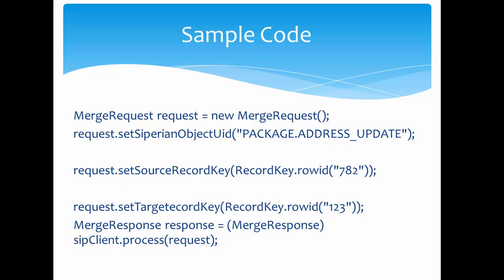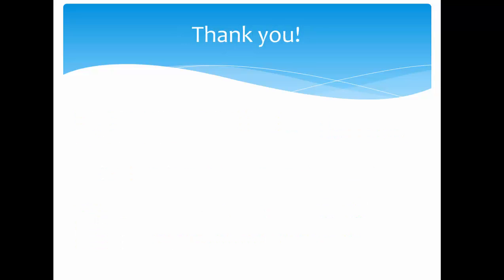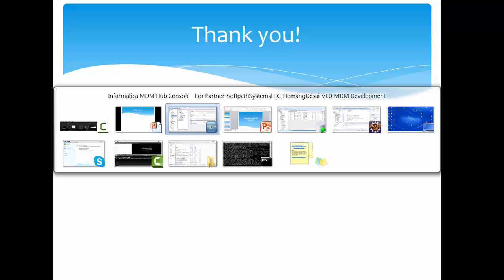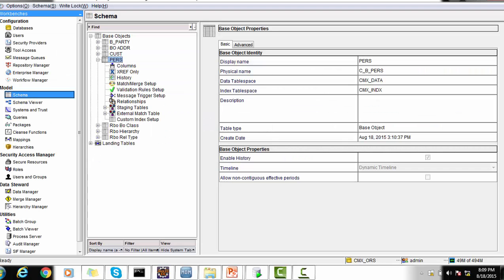For the sample code: we create an instance of MergeRequest using the new operator. On the request we set the package name — it should be PUT-enabled. Then we set the source record key, which is the record to be merged, and the target record key, which is the winner record. Then we call the SIF client's process method by passing this request.